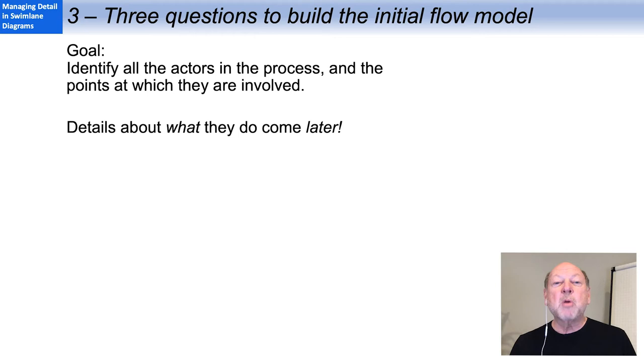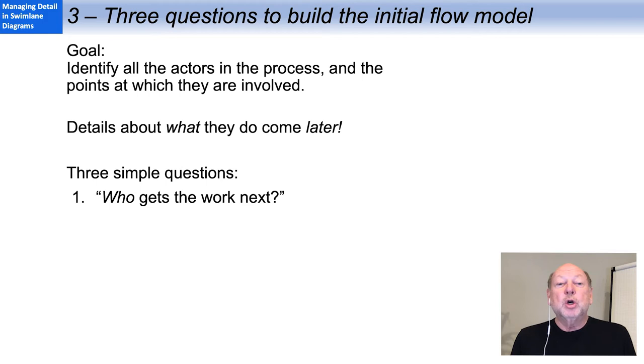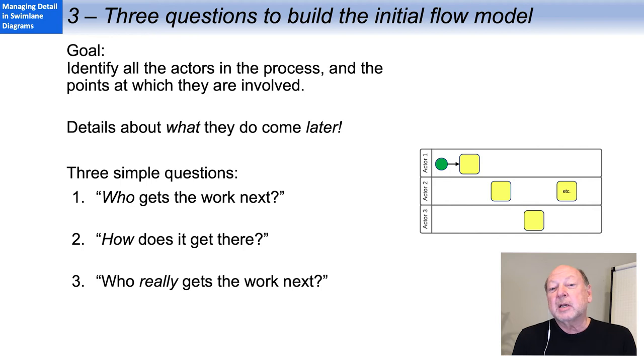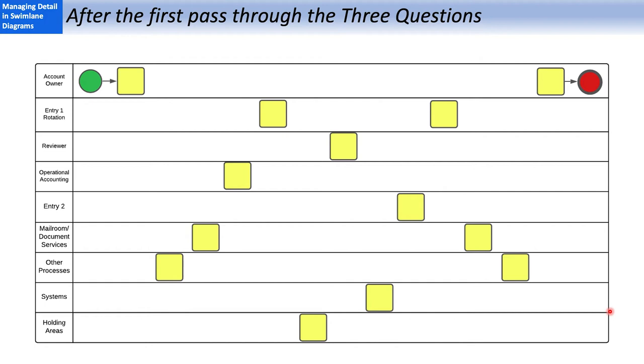Let's move into the heart of the matter, the three questions to help build your initial flow model. The goal here is simply to identify who is involved in the process, the actors, and at what points are they involved. The details about what they do are going to come later. The three simple questions begin with, who gets the work next? As you can see here, who gets it next, who gets it next, and so on. That forces you to keep looking at the flow of the process. Second, how does it get there? And third, who really gets the work next? Both of which typically uncover additional actors.